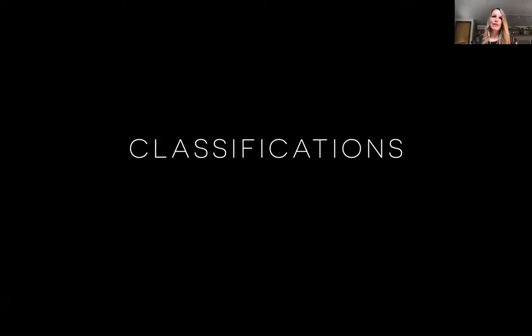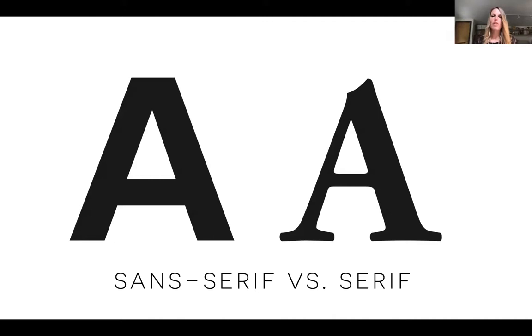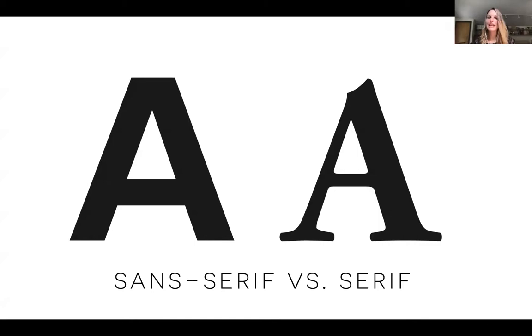Number two is classifications — just like categories. Once you understand your function, you can narrow down by style. The first distinction to understand is sans-serif versus serif. In French, 'sans' means without. Serifs are the finishing strokes on the bottom of letterforms — little feet. Sans-serif is without those feet. Those little feet have an important function: they create horizontal lines across the text that make it much easier for the eye to read.